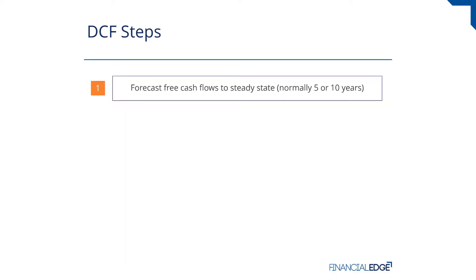The first of our DCF steps is to forecast the free cash flows up until the steady state period. That's normally for the first five or ten years — let's assume it's ten years in our example.